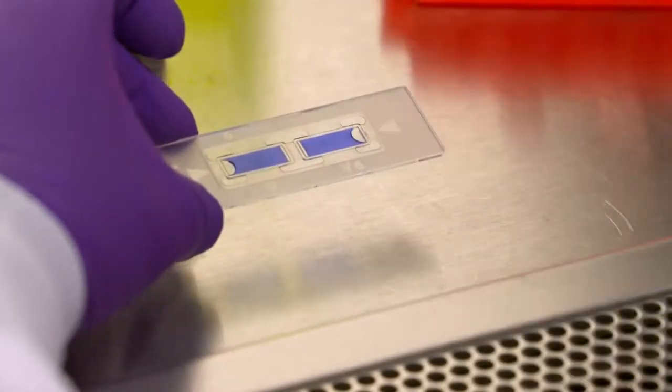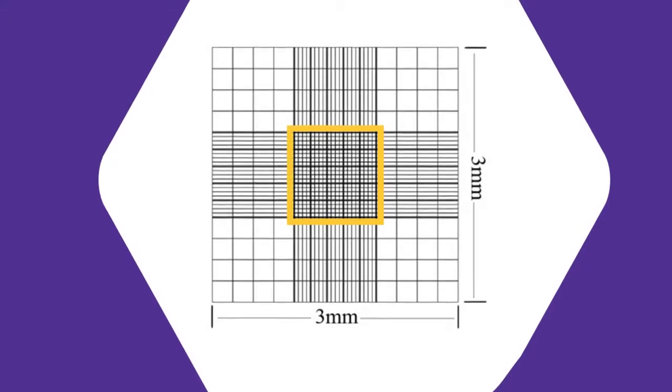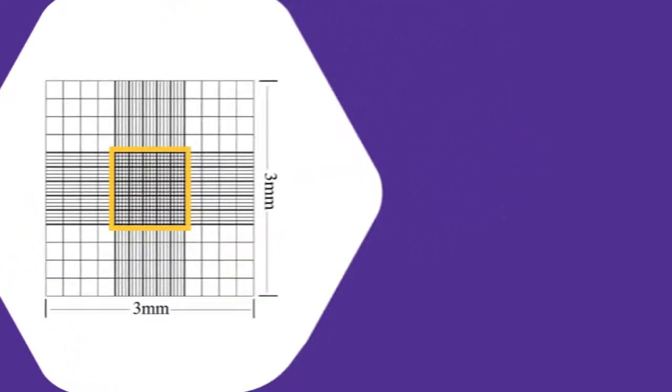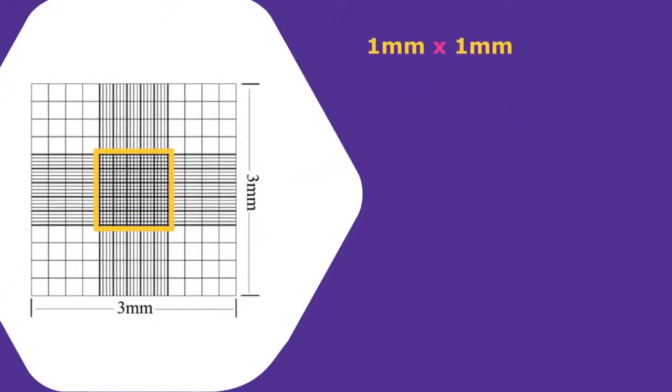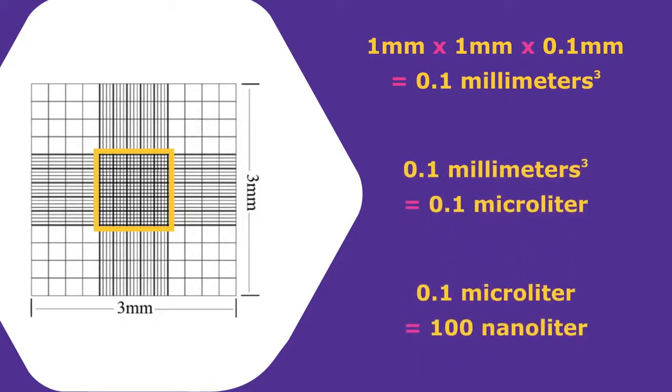Since we now know the height of the counting chamber, we can now calculate the volume. For example, let's focus on the center chamber that is highlighted. It consists of 25 squares with total surface area of 1 millimeter by 1 millimeter. Now, if we factor in the height of 0.1 millimeter, we can calculate the volume of that space. It'll be 1 square millimeter multiplied by 0.1 millimeter, which will be 100 nanoliters.